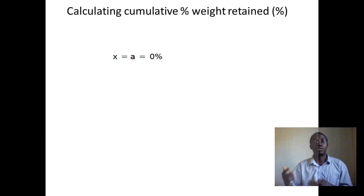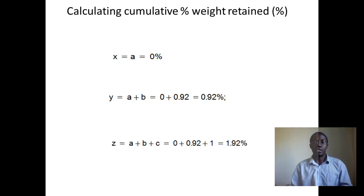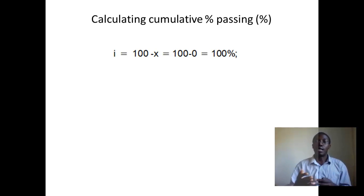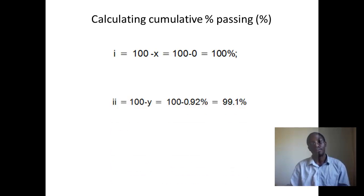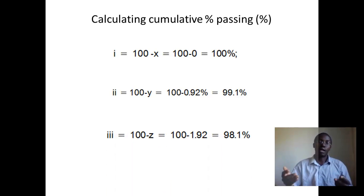For cumulative percentage weight retained: X = A = 0%; Y = A + B = 0 + 0.92 = 0.92%; Z = A + B + C = 0 + 0.92 + 1 = 1.92%. The cumulative percentage passing each sieve is calculated as 100% minus the cumulative percentage retained — for example, 100 − 1.92 = 98.08%.